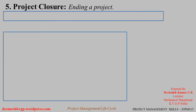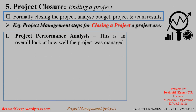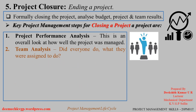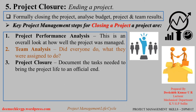The fifth and last phase is Project Closure — formally ending the project and analyzing budget, project, and team results. Key points: Project performance analysis — how well the project was managed overall. Team analysis — did everyone do what they were assigned to do? Knowing whether all team members completed their assigned jobs will help in future projects. Project closure — document the tasks needed to bring the project to an official end. By declaring it officially complete, all tasks are documented and the project is handed over to the customer.